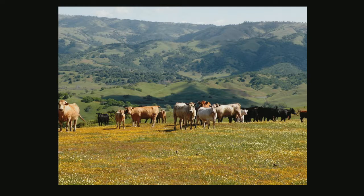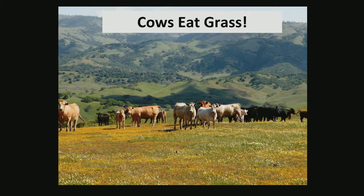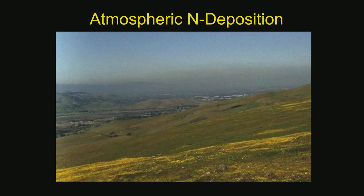So we knew what was going on, at least empirically. Cows eat grass; they maintain the biodiversity. We have happy California cows and happy wildflowers. The driver of this is the atmospheric nitrogen deposition blowing in from Silicon Valley and beyond.